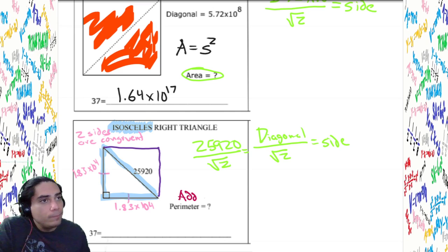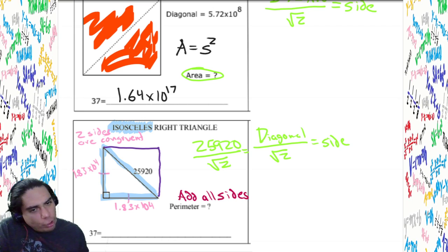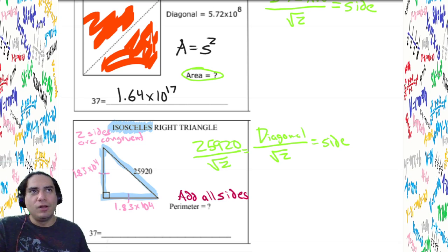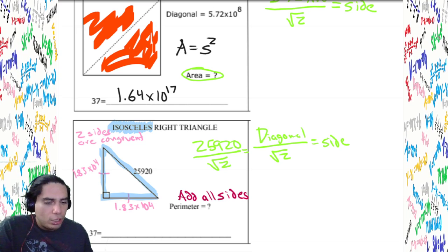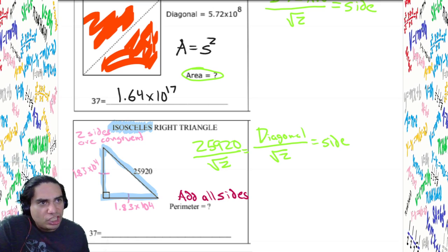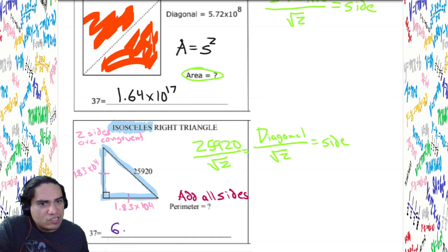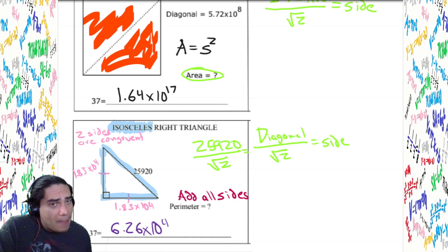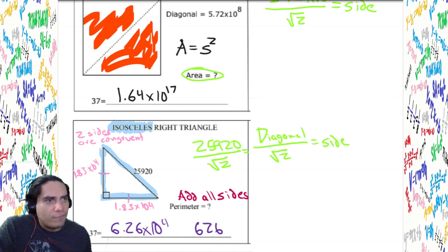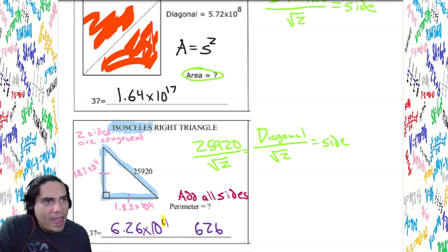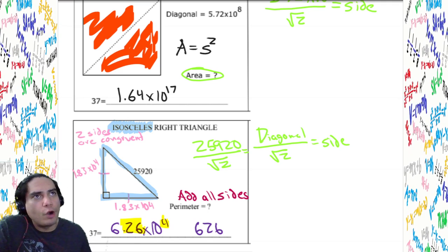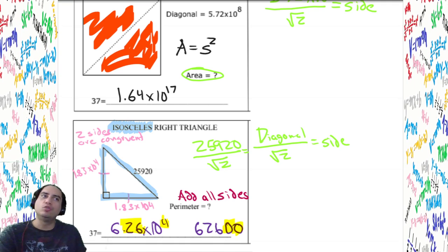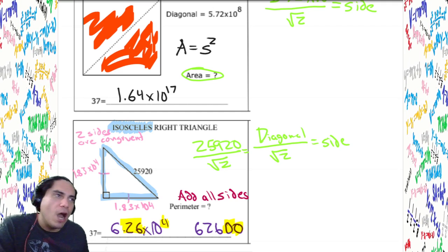Perimeter is all sides. Our answer: 6.26 times 10 to the 4th. In standard notation: we have exponent 4 and 2 decimal places, so 4 minus 2 equals 2 — write 2 zeros at the end: 62,600. Remember, if you see an isosceles right triangle, don't freak out. The sides in a right triangle are called legs — same concept as the square's sides.